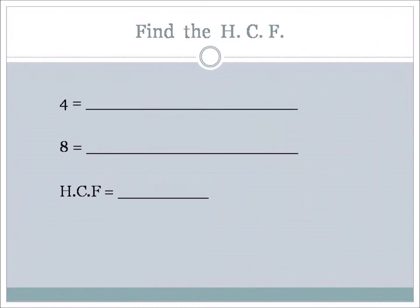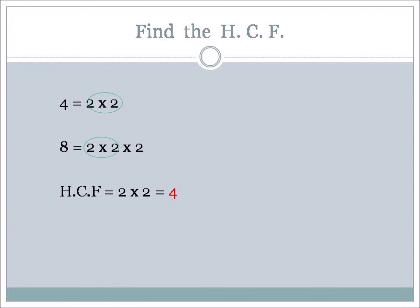Find the HCF of 4 and 8. For small numbers you can list factors, but let's use prime factorization. 4 is 2 × 2, or 2 squared in index form. 8 is 2 × 2 × 2, or 2 to the power of 3. Since 2 is common, use the least amount: 2 × 2. So the HCF of 4 and 8 is 4.